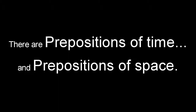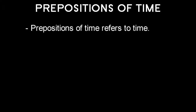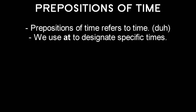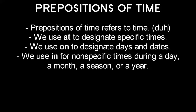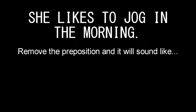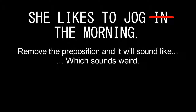There are prepositions of time and prepositions of place. Prepositions of time refer to time. We use 'at' to designate specific times, 'on' to designate days and dates, and 'in' for non-specific times during a day, a month, a season, or a year. For example: she likes to jog in the morning. Remove the preposition and it will sound like she likes to jog the morning, which sounds weird.